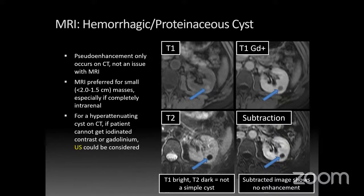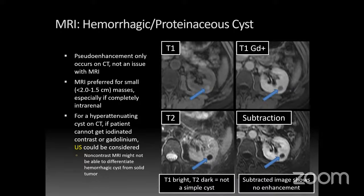An alternative: if a patient has a hyperattenuating cyst on CT and can't get iodinated contrast or gadolinium, an ultrasound can sometimes clarify a hyperdense cyst. Non-contrast MRI sometimes cannot differentiate a hemorrhagic cyst from a solid tumor, but if the T1 signal intensity is 2.5 times that of the adjacent renal parenchyma, you can call it a hemorrhagic proteinaceous cyst based on the 2019 Bosniak guidelines. In this case, though, the lesion doesn't appear 2.5 times as bright, so that criterion wouldn't apply here.